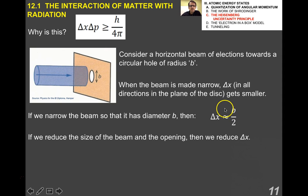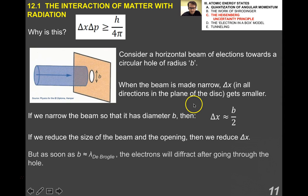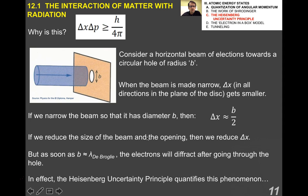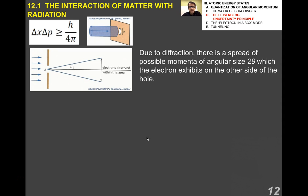If we reduce it such that B becomes on the same order as the de Broglie wavelength, the electrons will diffract after going through the hole. Because diffraction occurs when the wavelength of the wave is on the order of the size of the opening or the object being hit by the wave. In effect, the Heisenberg uncertainty principle quantifies this.